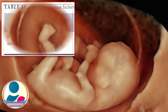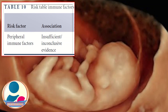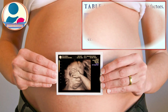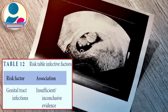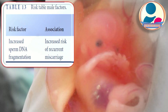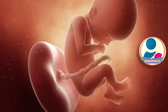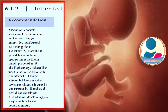The association of peripheral immune factors and uterine natural killer cells with recurrent miscarriage is inconclusive and insufficient. Genital tract infections similarly show insufficient and inconclusive evidence of association. However, research on increased sperm DNA fragmentation found an associated increased risk of recurrent miscarriage. For second trimester miscarriage, women may be offered testing for factor V Leiden, prothrombin gene mutation, and protein S deficiency within a research context, though current evidence that treatment changes reproductive outcomes remains limited.